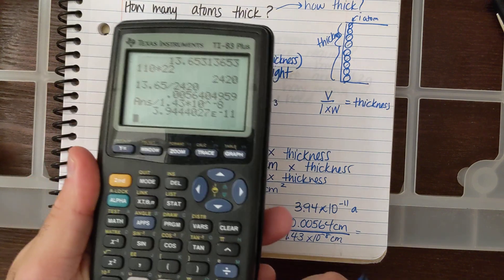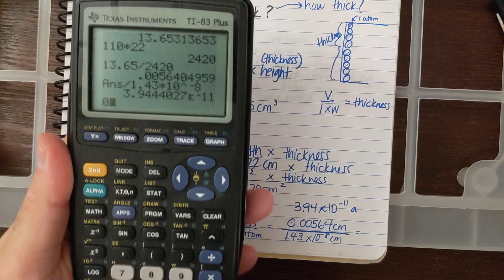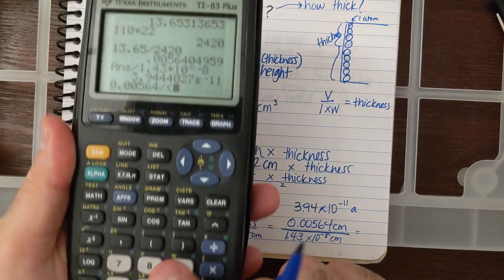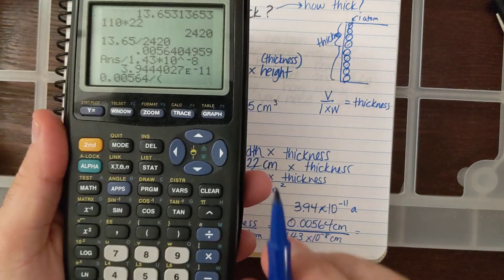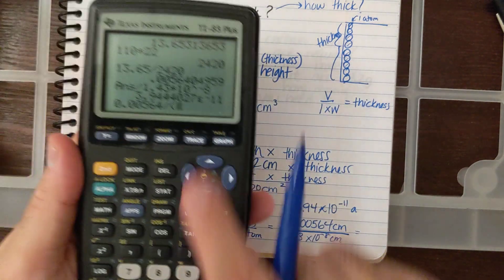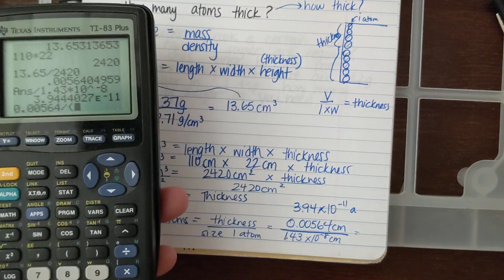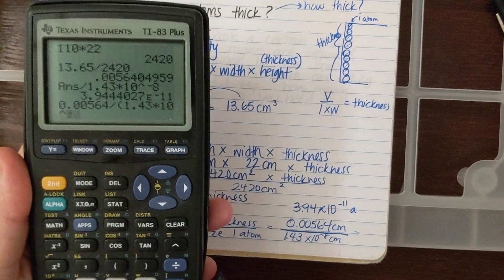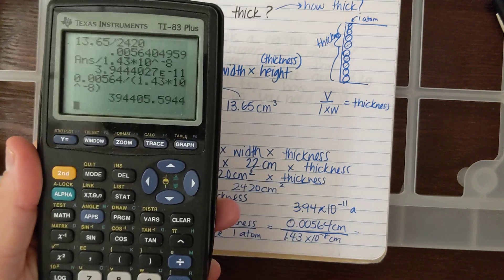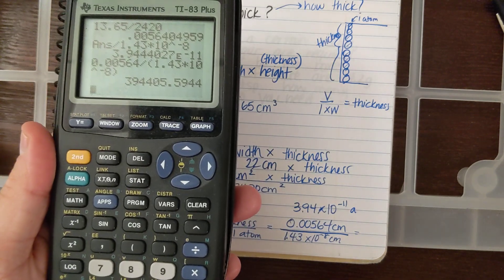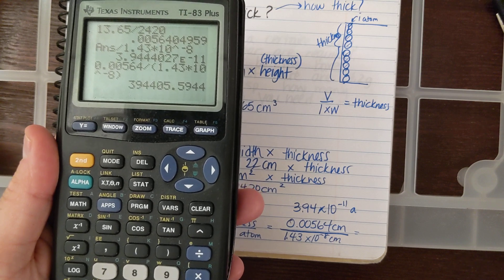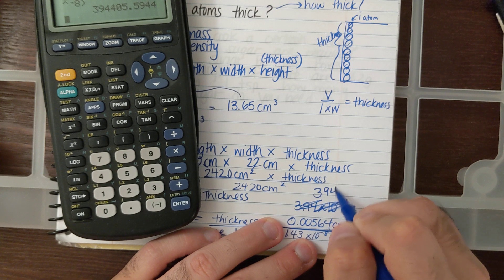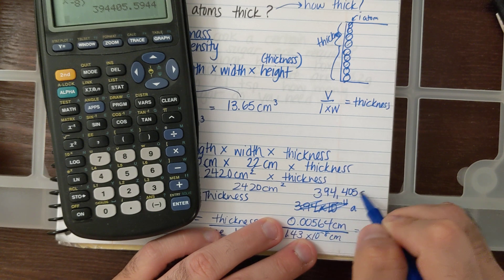My calculator did this wrong. This is what happens when you have to be careful with the calculator. Minus 11 doesn't make any sense. Let me do 0.00564 divided by, you always have to use parentheses, 1.43 times 10 raised to the minus eighth. And I get, there we go, a lot of freaking atoms. 394,405 atoms.